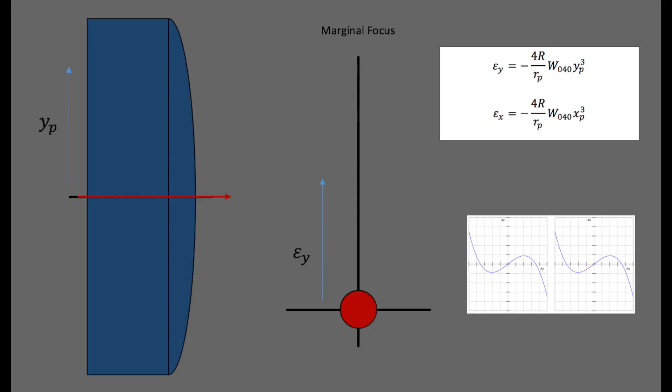If the lens is symmetric in geometry and optical properties about the sagittal and tangential axes, the ray errors are equal with respect to the pupil coordinates.